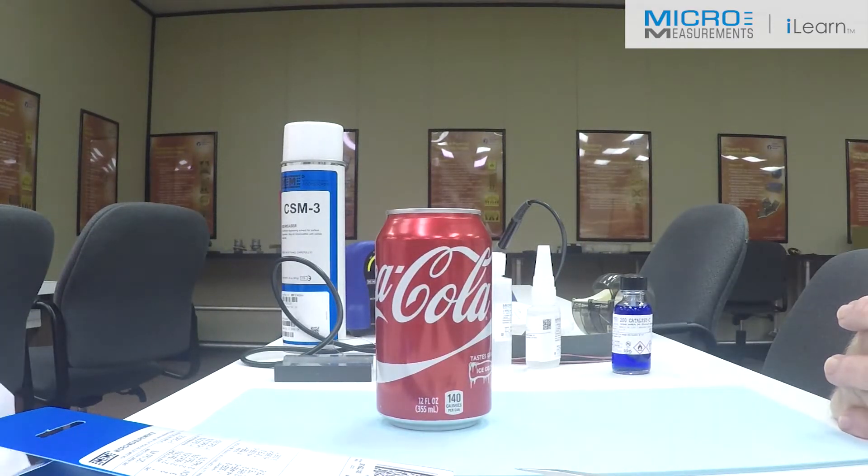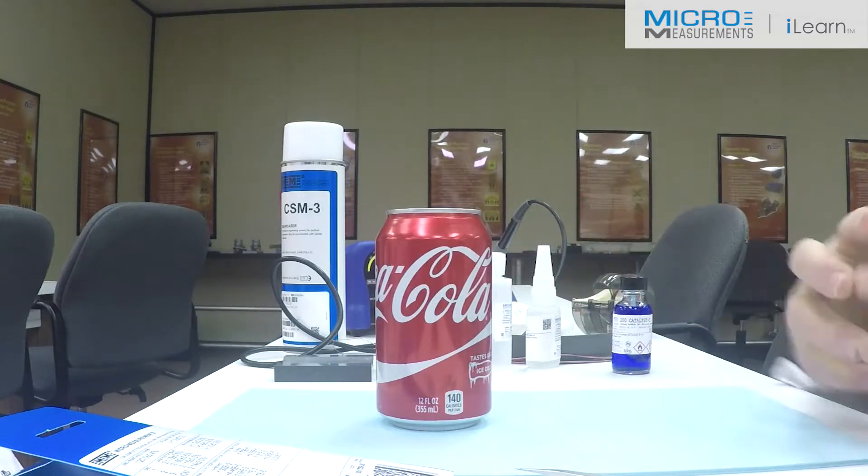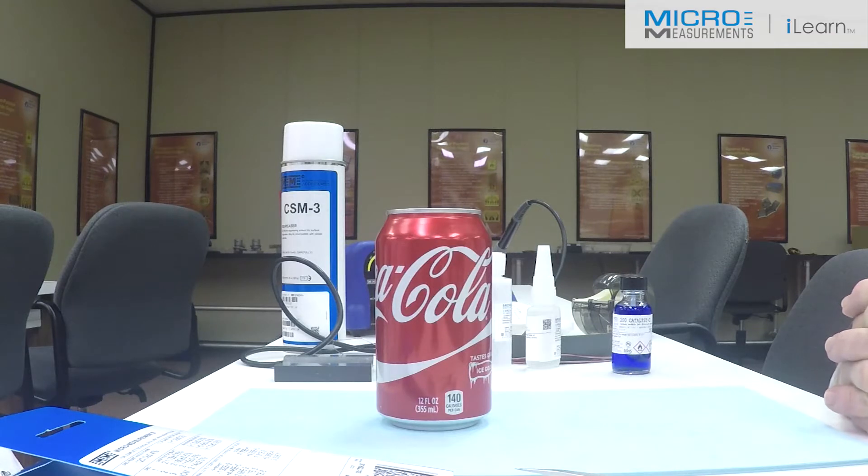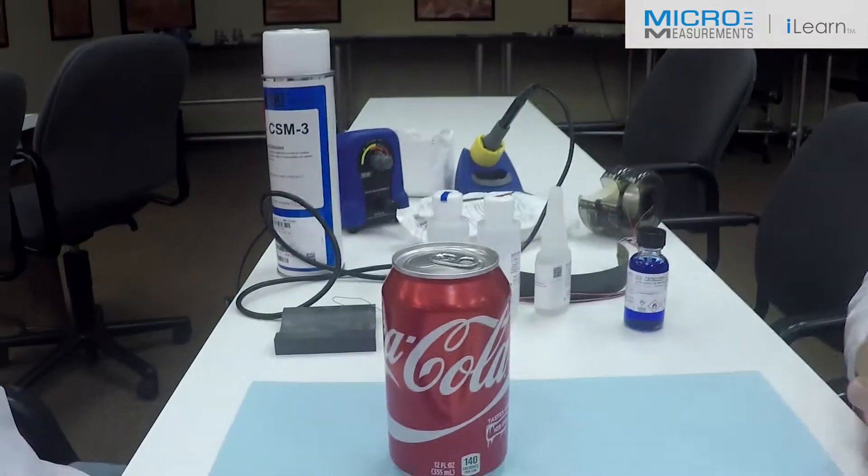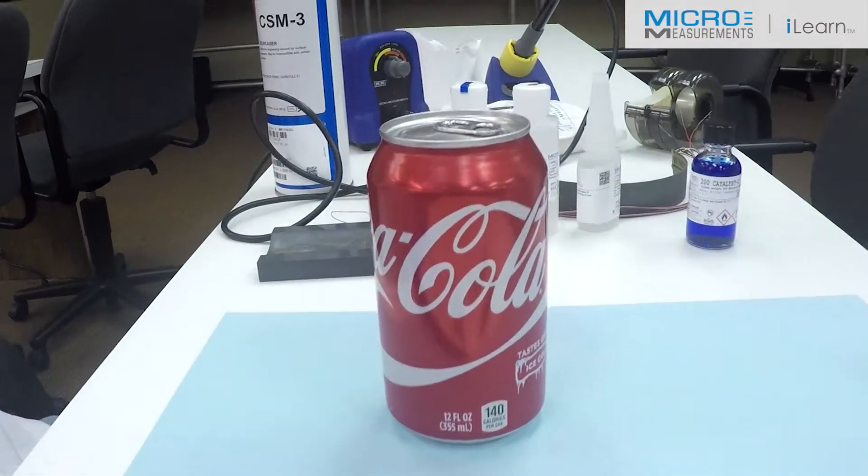Hey Tom, looks like you got a Coke can there. What are you doing with that? We're going to demonstrate a couple of things today. First, we're going to bond a three element rosette to a curved surface using M-Bond 200. We're going to use the information from that three element rosette, which can give us direction and magnitude of the principal strains, to do some mathematical gymnastics and predict the pressure in this Coke can.